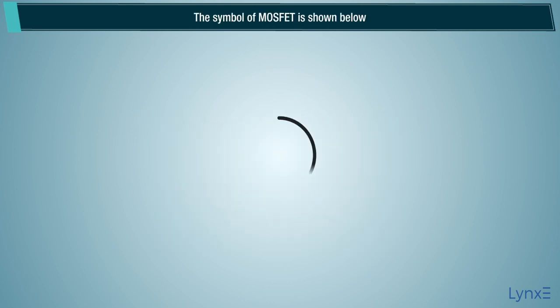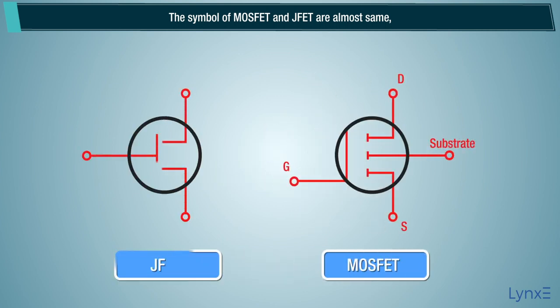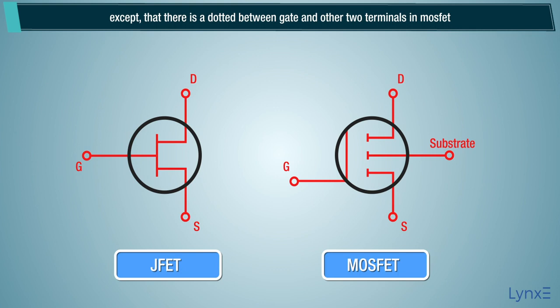The symbol of MOSFET is shown below. The symbol of MOSFET and JFET are almost the same, except that there is a dotted line between gate and other two terminals in MOSFET.